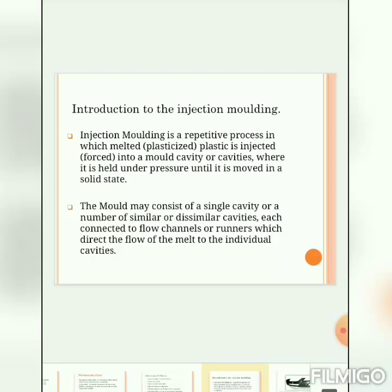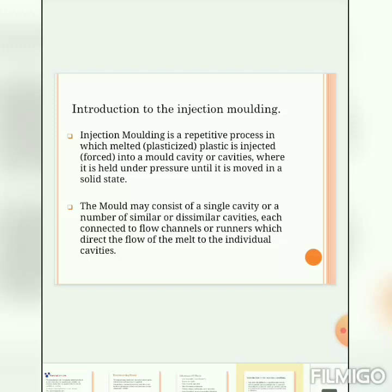Injection molding is a repetitive process in which melted or plasticized plastic is forced into the mold cavity or cavities, where it is held under pressure until it moves into the solid state. We melt the plasticized material and force it using a clamping device and eject device into the core and cavity, and after solidification we eject the part from the mold.